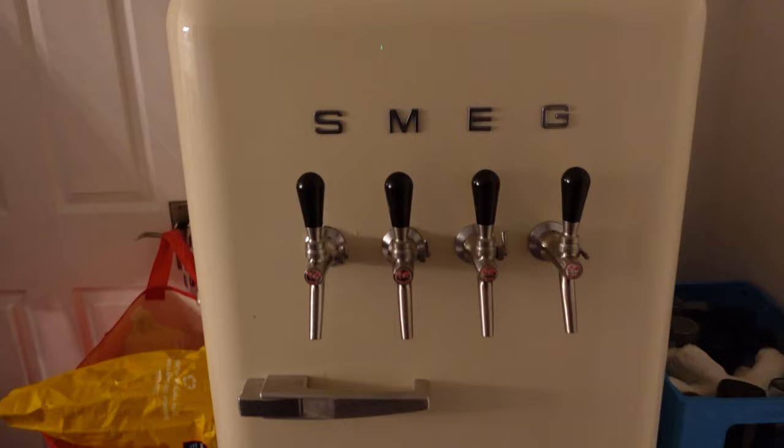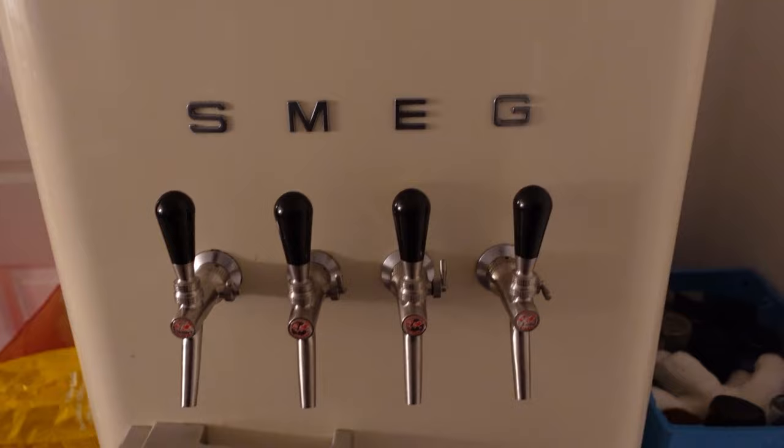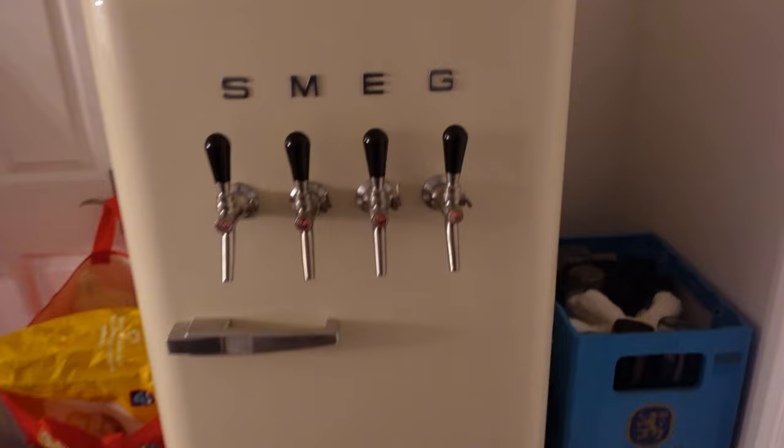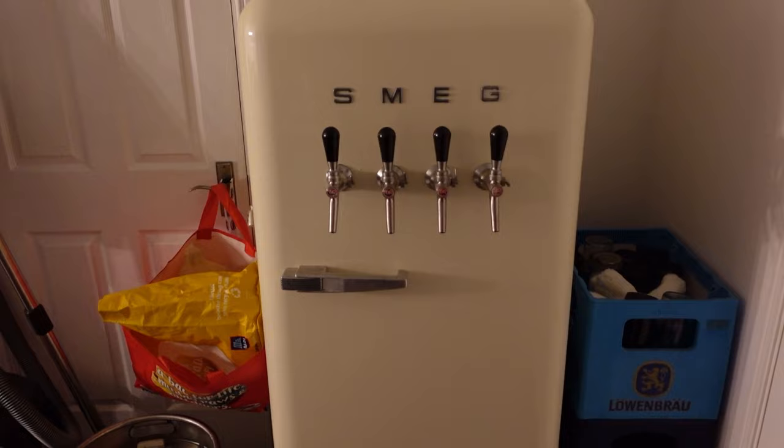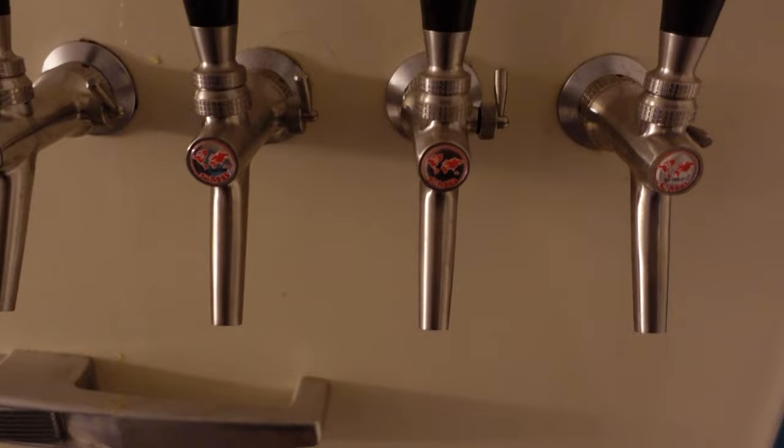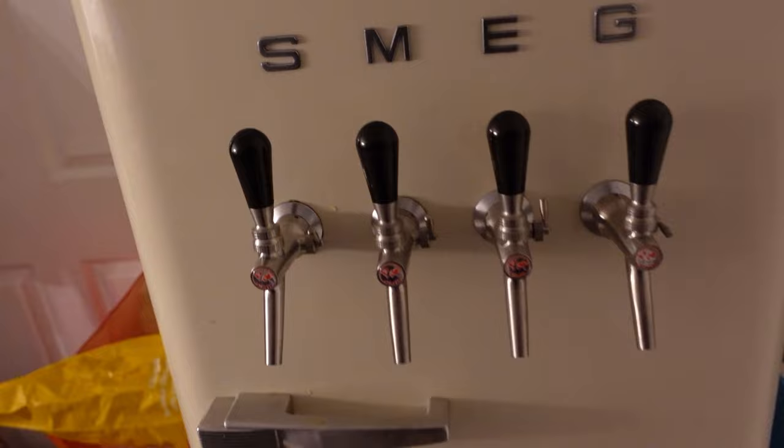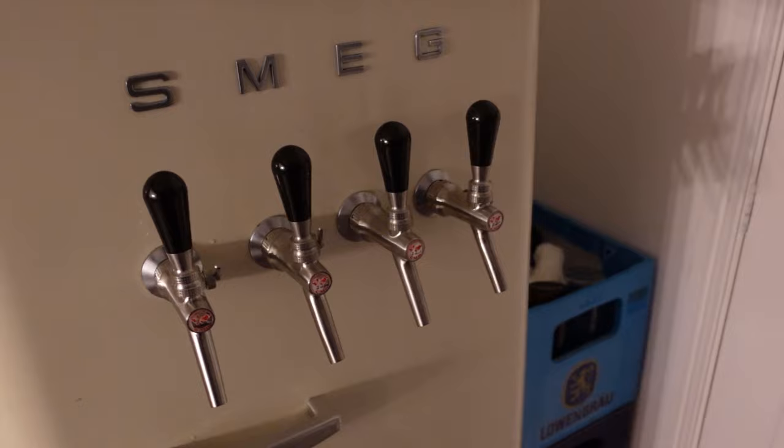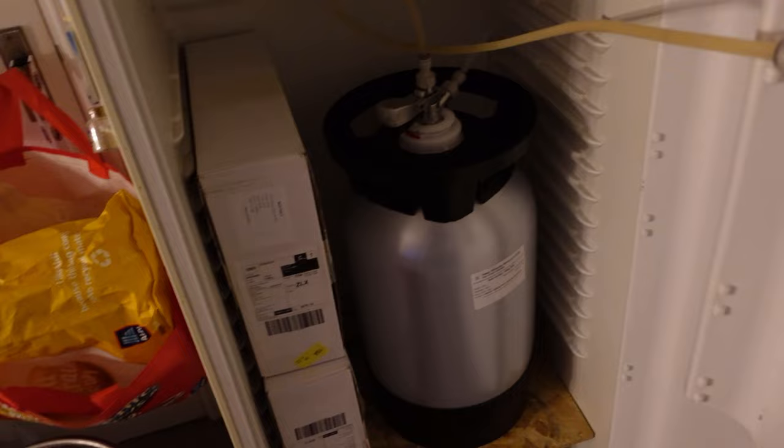Right, here we are, back at home. For those of you that haven't seen the Smegarator before, say hello to the Smegarator. 50 quid, what a purchase. It wasn't working, it was all iced up. So, I had a little fiddle with it, got it back into action, and then stuck four of these CMB, CM Becker taps on the front, which have got flow control to deal with the foamage and whatnot. However, there's only one keg in it at the moment, which is the 30 liter poly keg that I've just borrowed from the brewery. I want some hops as well.